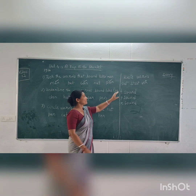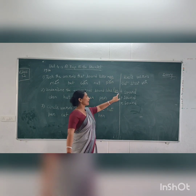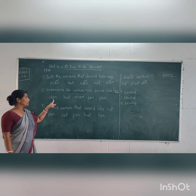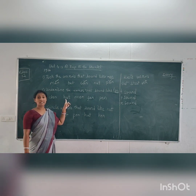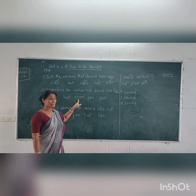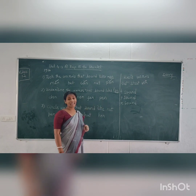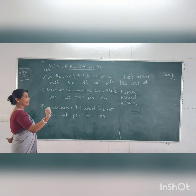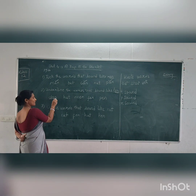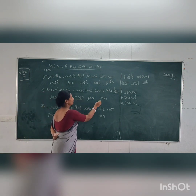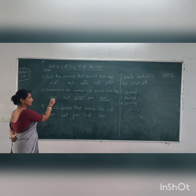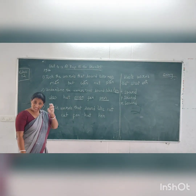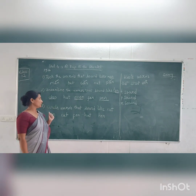You have to concentrate on the 'en' sound. The words are: den, hut, men, fan, pen. So the words with the 'en' sound are den, pen, and men. You underline den, pen, and men — these all have the 'en' sound. Clear?